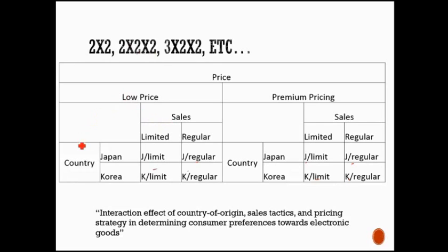So this is called a two by two by two, where basically you have three IVs, each manipulated into two levels, you have country manipulated into Japan and Korea, you have sales, right, manipulated into limited or regular, and then you have price, low or premium, which is $3.99 versus $5.99.